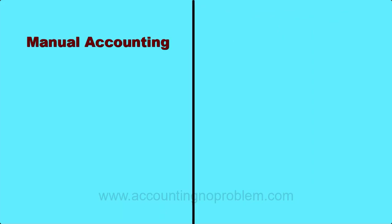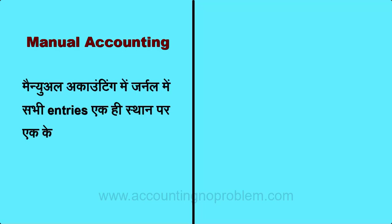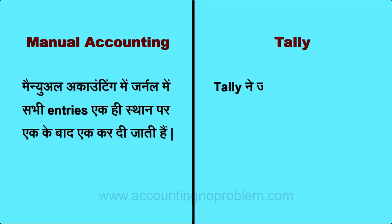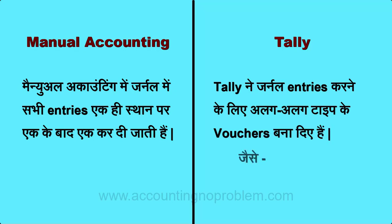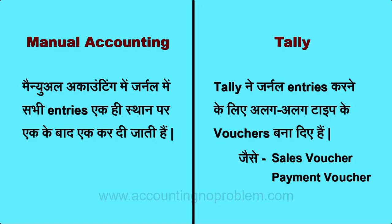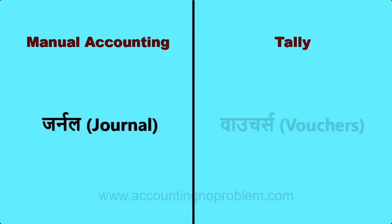Manual accounting की process समझाने के दौरान हमने आपको journal क्या है ये बताया था। Manual accounting में journal में सभी entries एक ही स्थान पर एक के बाद एक की जाती हैं, जबकि Tally ने journal entries करने के लिए अलग-अलग type के vouchers बना दिये हैं। जैसे यदि आपने कोई माल बेचा है तो उसके लिए sales voucher, यदि किसी को कोई भुगतान किया है तो उसके लिए payment voucher। कहने का तात्पर्य यह है कि manual accounting में जो काम journal में होता है, Tally में वो काम vouchers की सहायता से होता है।